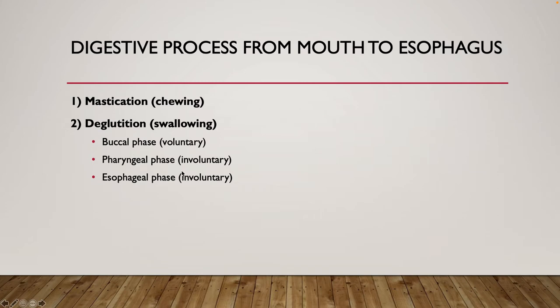We start with the buccal phase, which is voluntary. This is when we have food in our mouth, and we voluntarily move it backwards, posteriorly, into our oropharynx. As you're chewing, you can voluntarily move food from your mouth posteriorly into your pharynx, or your oropharynx.